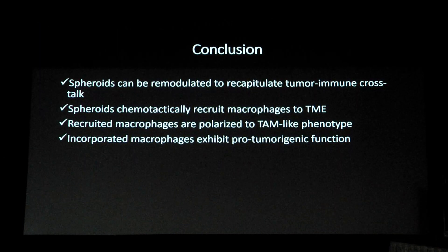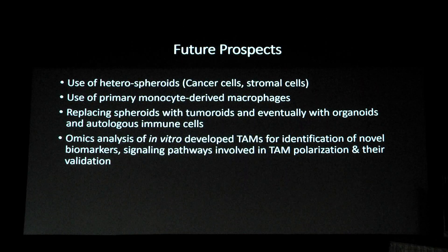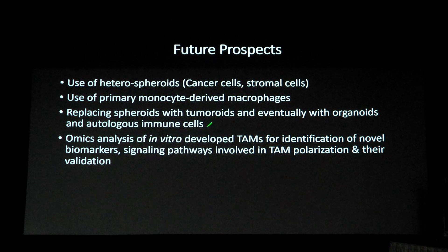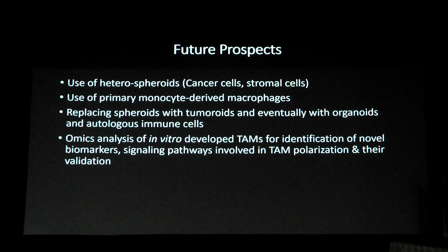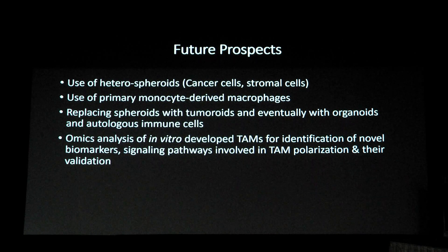In conclusion, spheroids can be used as a model to recapitulate tumor-immune crosstalk. They can chemotactically recruit macrophages, polarize them into TAMs, and the polarized TAMs then help cancer cells to migrate. Currently, I am working with heterospheroids instead of homospheroids, and using primary monocyte-derived macrophages instead of cell-line-derived macrophages. In the future, I plan to work with patient-derived tumoroids and eventually replace spheroids with organoids. I also plan to perform omics analysis of these in vitro-developed TAMs, which may reveal novel biomarkers and signaling pathways involved in macrophage polarization into TAMs.